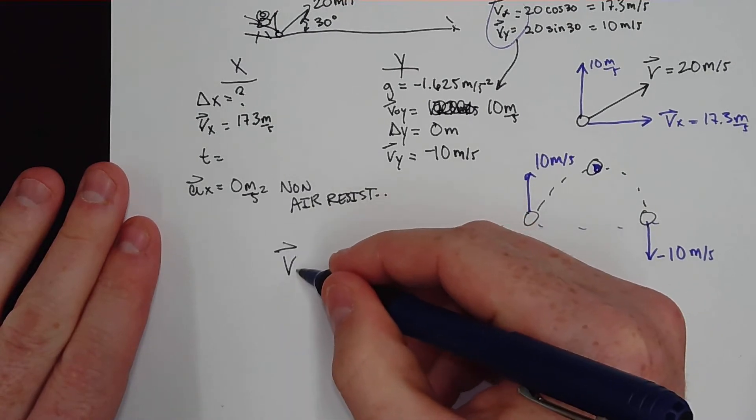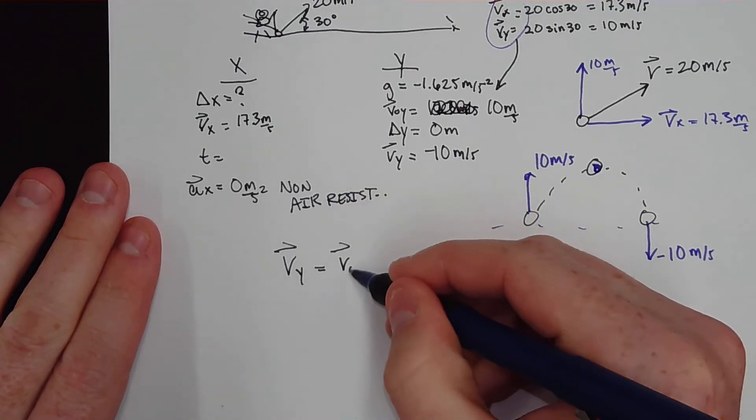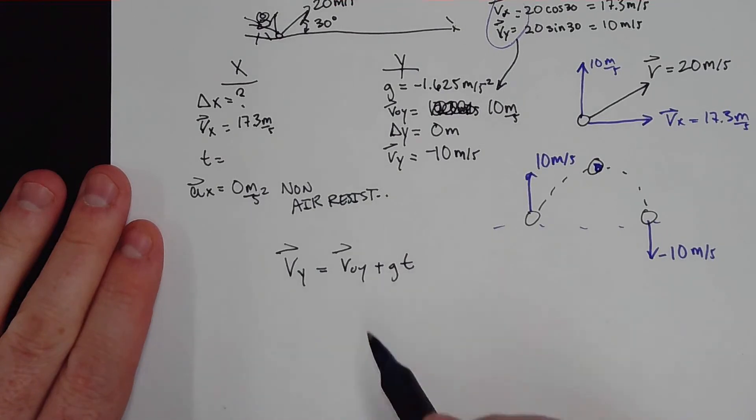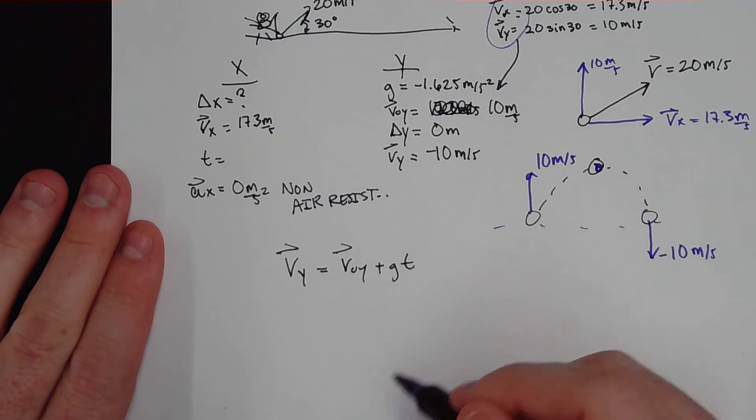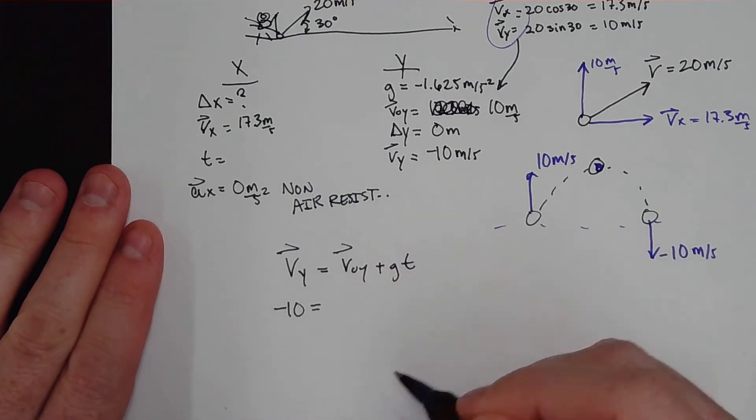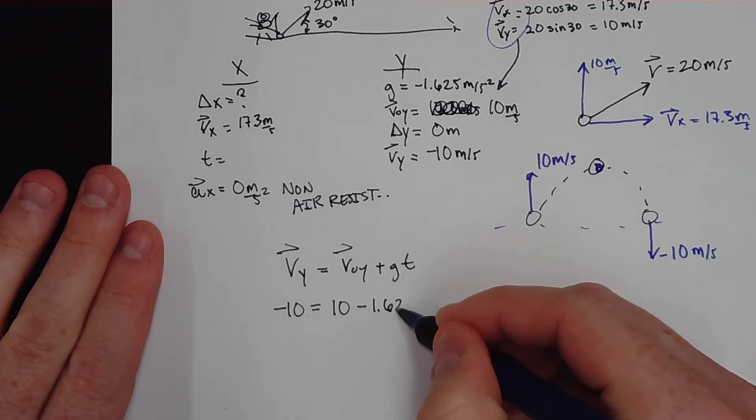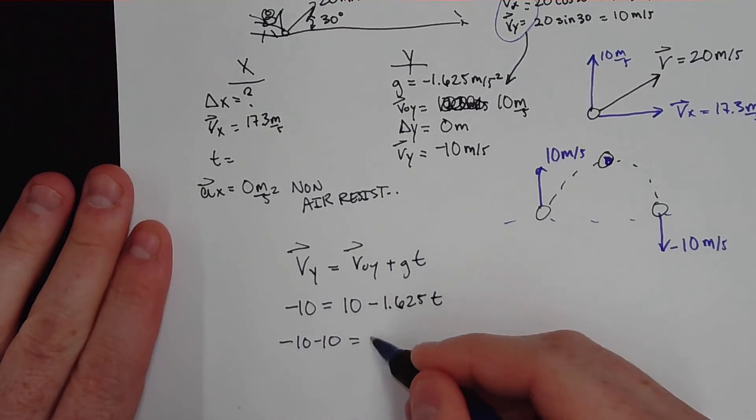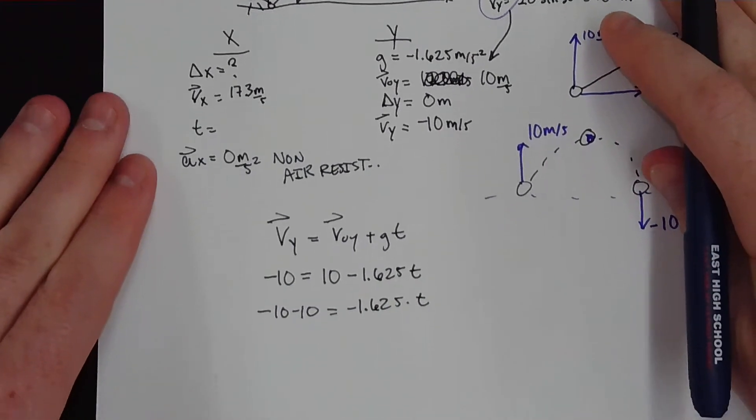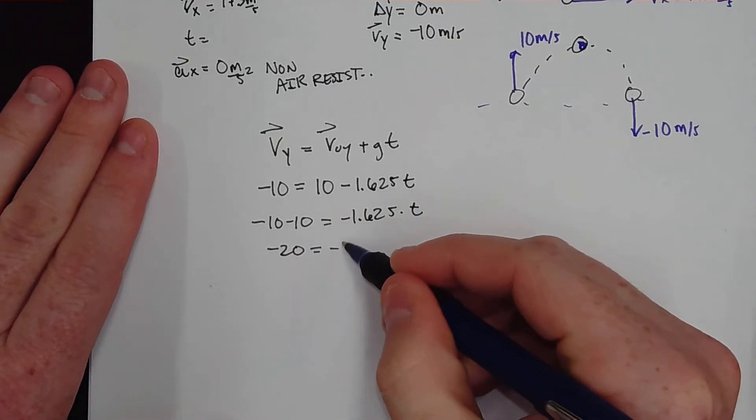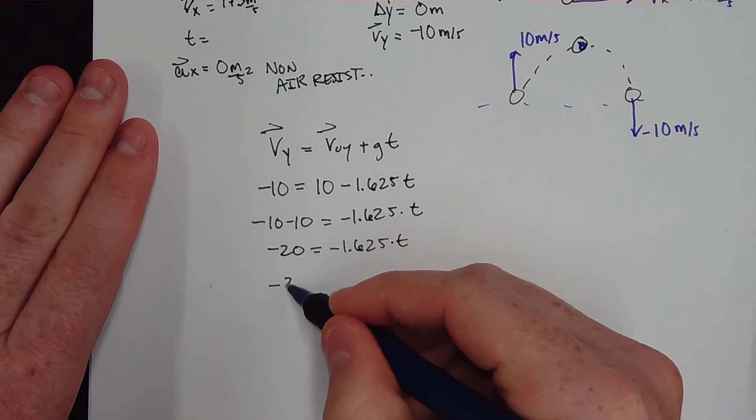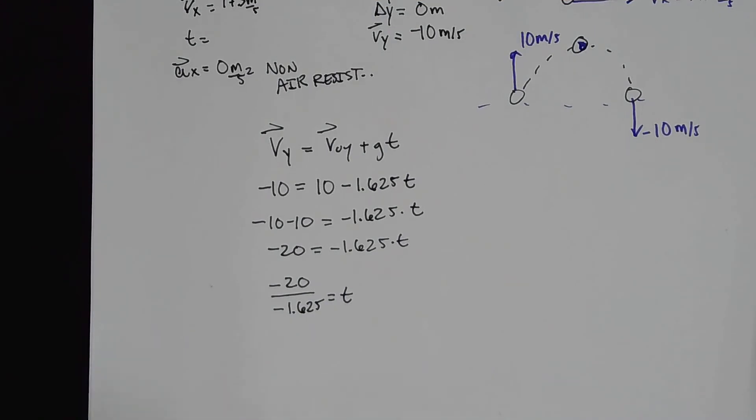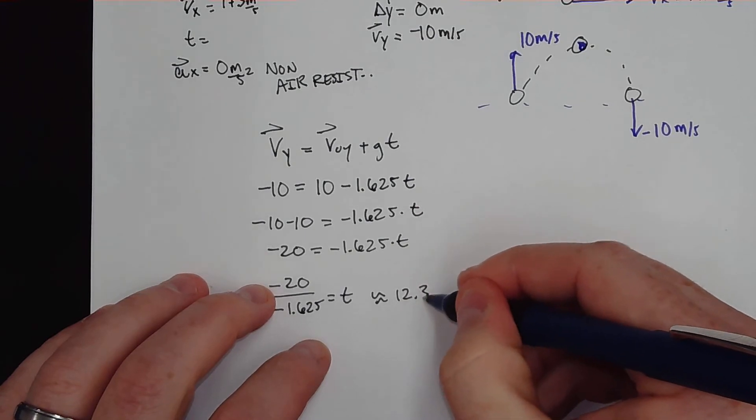So the final velocity in the y direction is equal to v naught y plus gt. And that is the very basic kinematics. So if we know it's negative 10, it's how fast it's coming back down, and this is positive 10, and we know the acceleration of gravity on the moon, we can then solve for this. So just solving for this, we get negative 10 minus 10 equals negative 1.625 times t. That gives me negative 20 equals negative 1.625 times t. Solving for t, we've got to divide both sides by negative 1.625, and that will give us our answer. And we get right at approximately 12.3 seconds. That's some hang time right there.